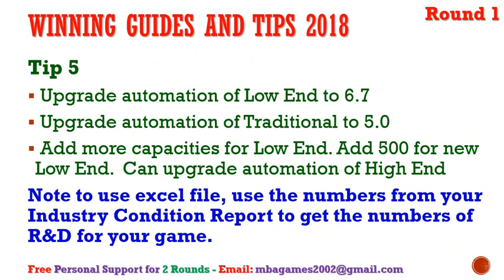Tip number five: update automation for low-end to around 6.5–6.7, for traditional to 5. These are examples — you can update to 6.5 or even 7 depending on the investment allowed for round one. Low-end needs high automation because automating low-end production can save a lot of cost. Then increase to 8 and 10 as far as possible over two or three rounds for low-end and traditional.